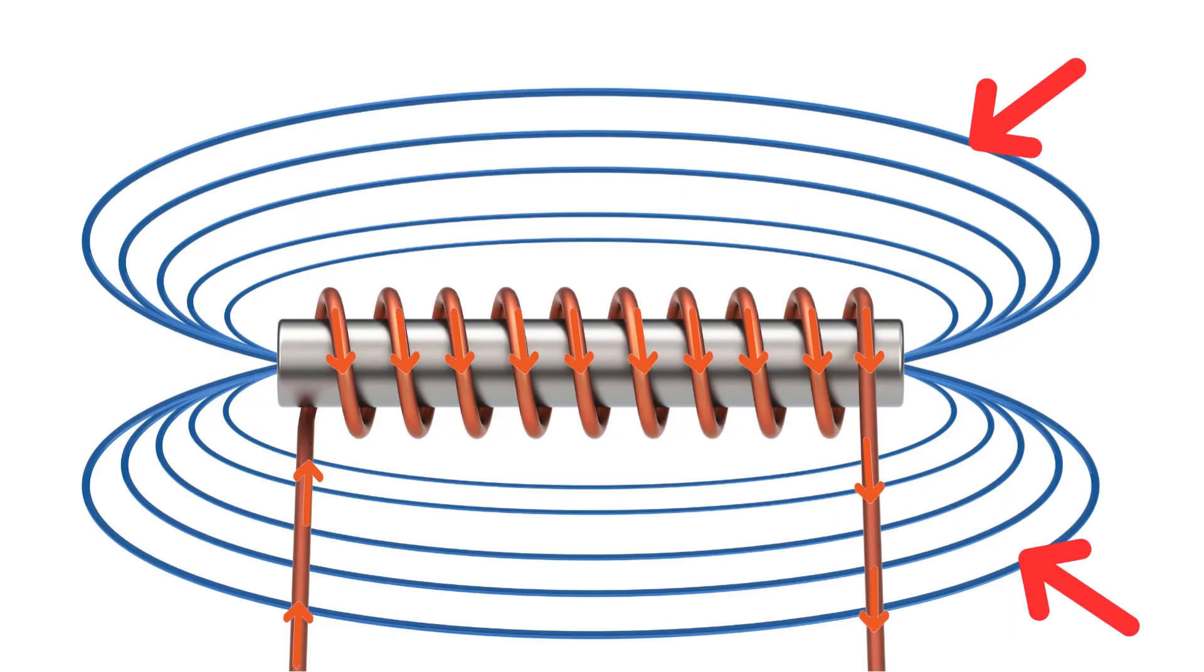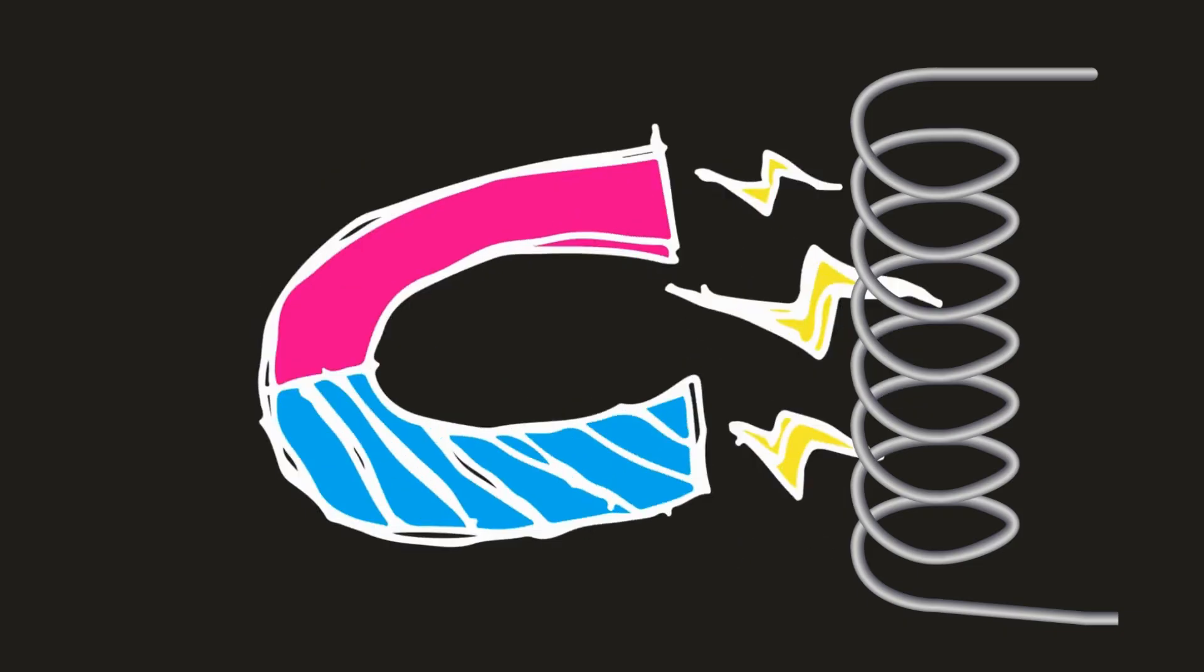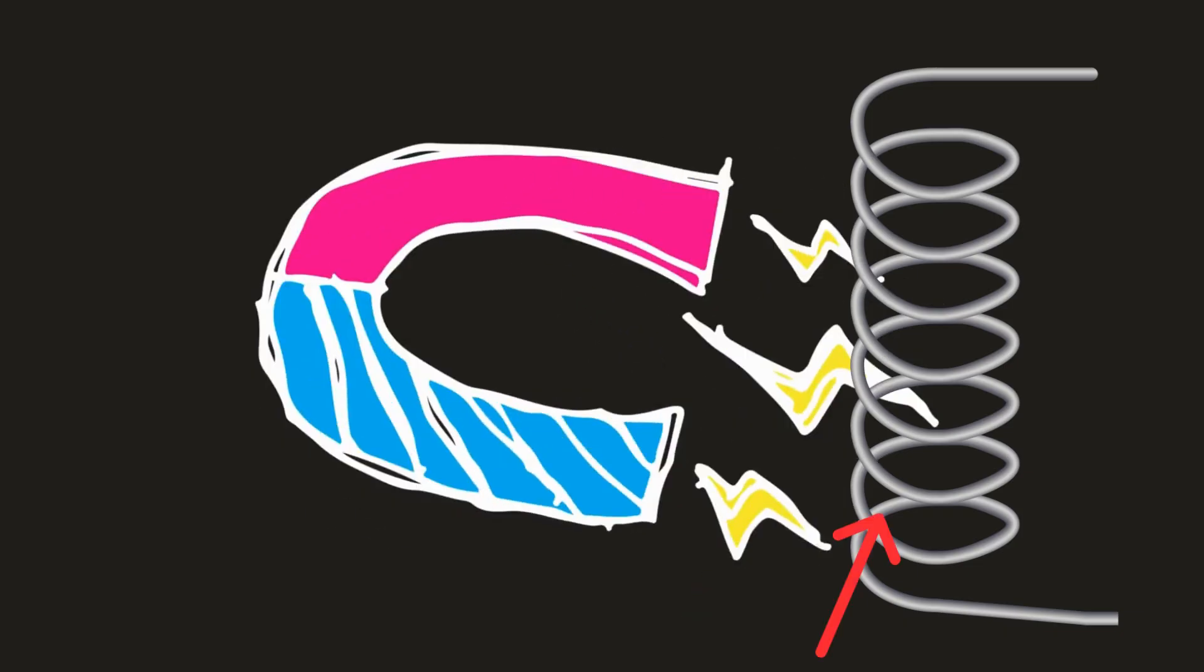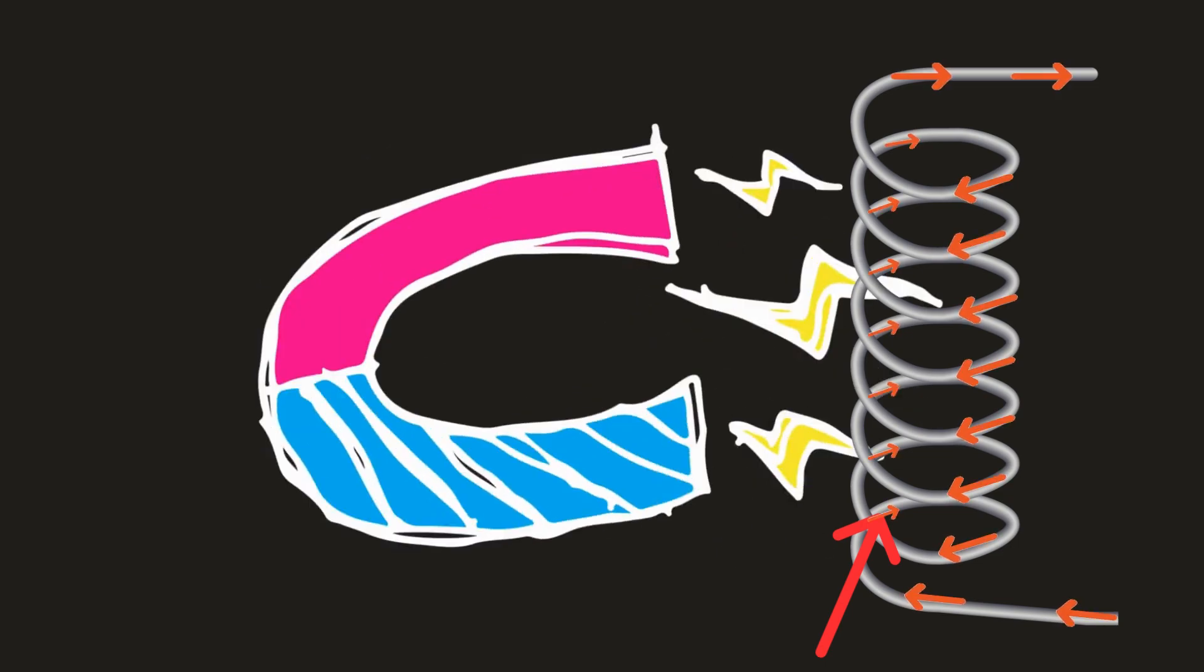Magnetic fields are created when electric charges are in motion, and on the opposite side of the coin, magnetic fields in motion near a wire can create an electric charge by inducing the movement of electrons through it.